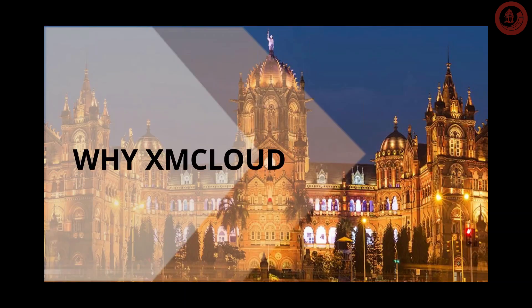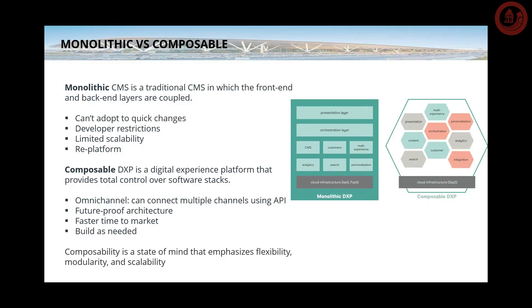Let's see why XM Cloud is a buzzword. Before jumping to XM Cloud, we should know about monolithic versus composable. Monolithic CMS is a traditional CMS where the front-end and back-end layers are coupled. The problem is it cannot adapt to quick changes, has developer restrictions, limited scalability, and one day you have to replatform. The composable DXP — digital experience platform — provides total control over software stacks and is omni-channel.